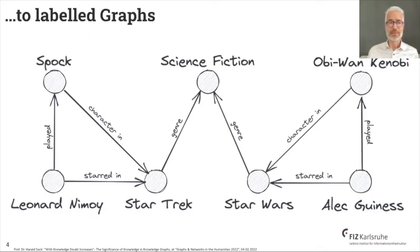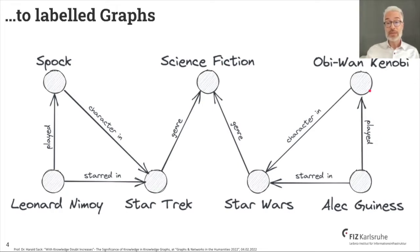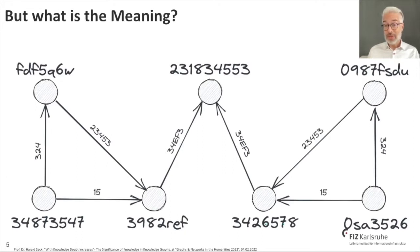Now let's progress to labeled graphs — things are different here. We have specific labels on the edges, and these labels carry specific meaning. For example, this says that Leonard Nimoy starred in the TV series Star Trek and played the character of Spock, and Star Trek belongs to the science fiction genre. On the other hand, we have Alec Guinness, who played the character of Obi-Wan Kenobi in the original Star Wars series. But how does a computer interpret this kind of graph?